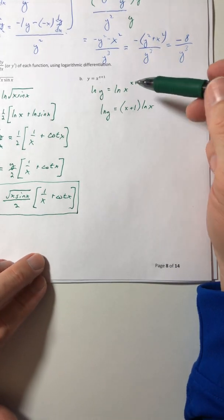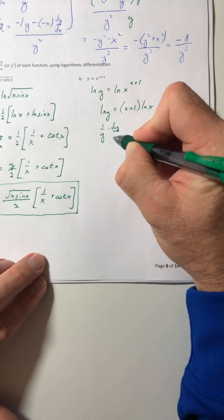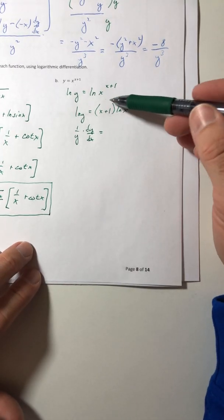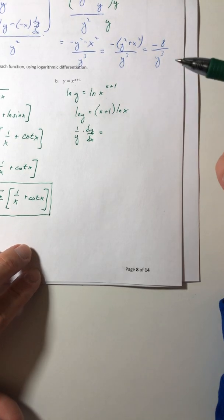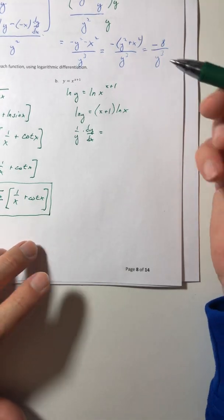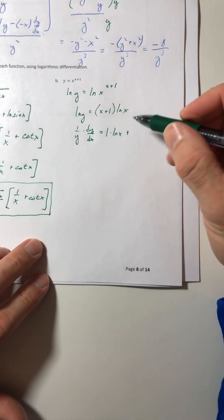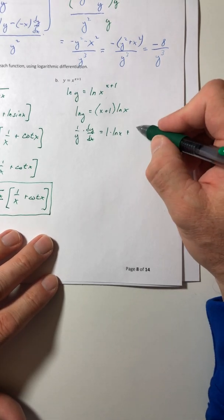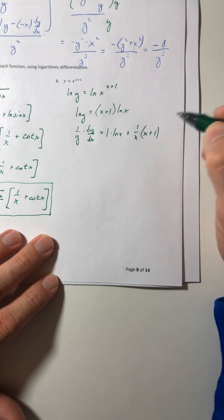And now I can take the derivative. So one over y times dy dx is equal to, the product rule is going to apply here. Even if I distributed the ln of x across, you'd still use the product rule in there. So the derivative of x plus one is one times ln of x plus the derivative of ln of x is one over x, times x plus one.